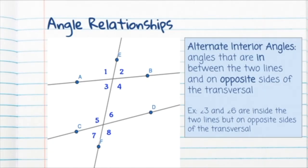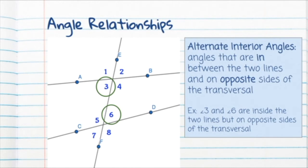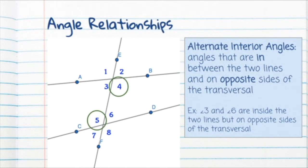We also have something called alternate interior angles — angles that are in between the two lines and on opposite sides of the transversal. So angles three and six are both inside lines AB and CD, but they're on opposite sides of the transversal, so they are alternate interior angles. Angles four and five are also alternate interior angles.